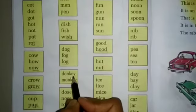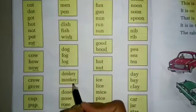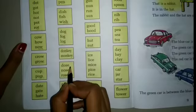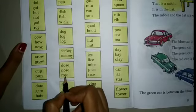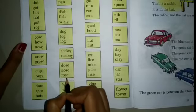D-O-S-E Dose, N-O-S-E Nose, R-O-S-E Rose. OSE is the same ending of these words.